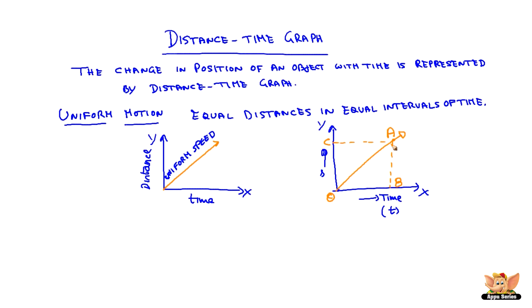Now we know that speed is distance traveled divided by time taken. In this case, the distance traveled for an object from O to A is AB, and the time taken is OB. AB divided by OB is nothing but the slope of the graph line OA.